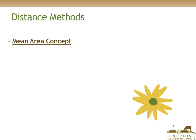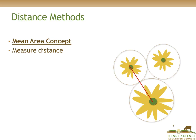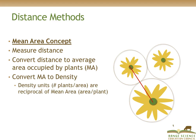The main concept that unites distance methods is the mean area concept. With this approach, we measure the distance between two plants and do that for multiple plants. We then convert the distances measured to the average area occupied by a plant. Mean area is abbreviated as MA. We then convert mean area to density, because the units for density are reciprocal to the units for mean area — the number of plants per unit area is reciprocal to the mean area per plant.